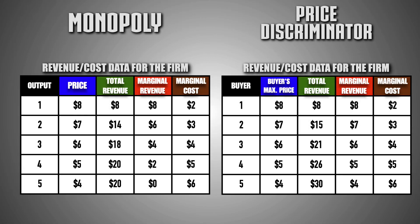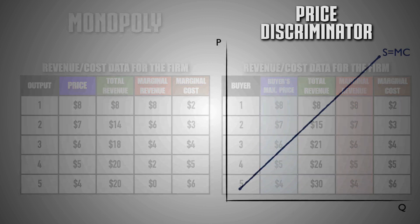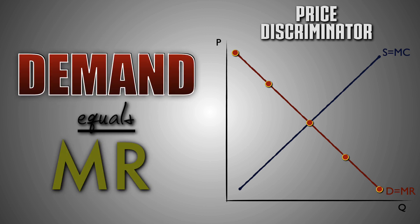Notice that the marginal revenue gained from each unit equals the buyer's maximum price paid by each individual consumer. When plotting the marginal revenue earned by the firm when each additional unit is sold, it will be identical to the price per unit at each quantity demanded. As a result, the firm's marginal revenue curve and demand curve will be identical, representing that demand equals marginal revenue equals price for the price discriminating firm.